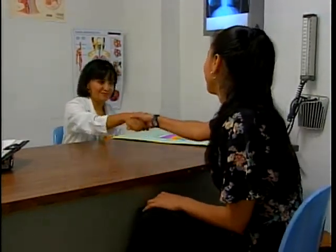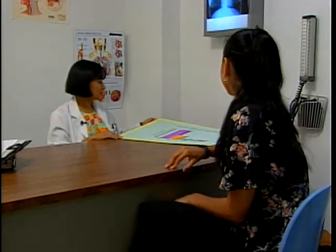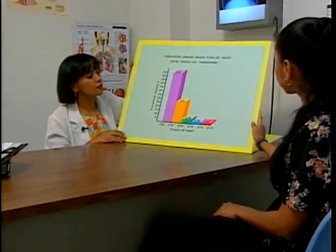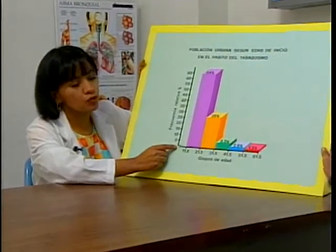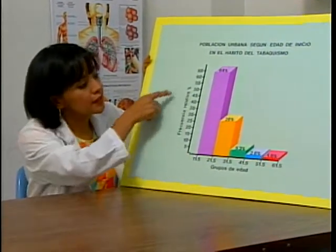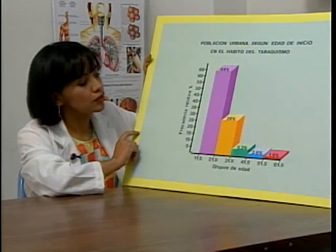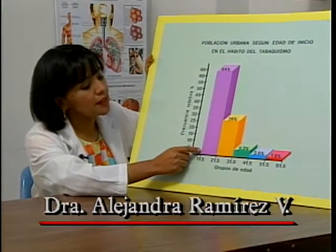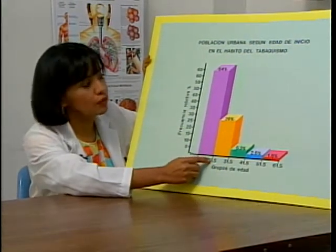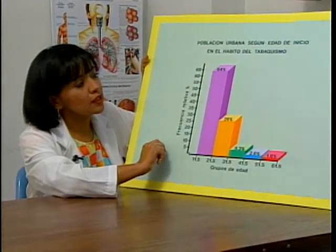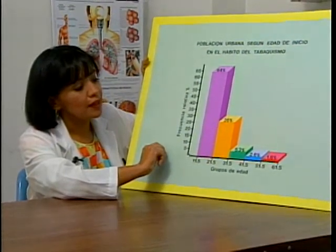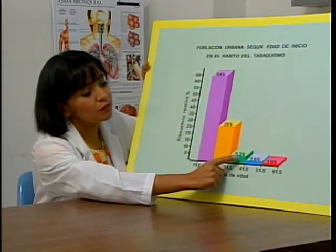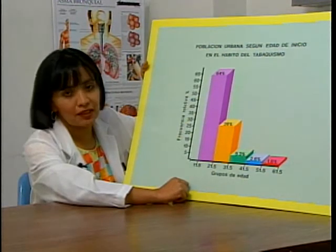Buenas tardes. Esta es la primera gráfica en donde estamos hablando de la edad de inicio en el hábito del tabaquismo. En el eje horizontal vemos los grupos de edad de inicio y en el eje vertical estamos viendo la frecuencia de sujetos para ese grupo de edad. Ustedes pueden ver a simple vista que la primera barra está representada por el grupo de 11 a 21 años, lo que quiere decir que la mayoría de las personas empiezan a fumar en edades tempranas.